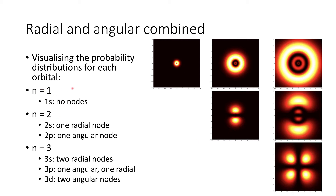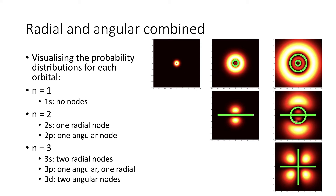Overall, for n=1 there are no nodes, for n=2 there is always one node, and for n=3 there are always two nodes. This corresponds exactly to our particle-in-a-box discovery, where we always have one fewer node than the quantum number itself. What differs in spherical coordinates is that we start to see different types of nodes — radial nodes and angular nodes. Radial nodes correspond to nodes in the potential energy wave function, while angular nodes correspond to nodes in the kinetic energy distribution. For the 3p orbital, we can see the combination of the radial node (a circle) and the angular node (a line across it).